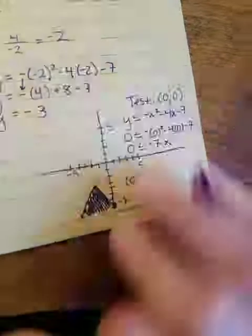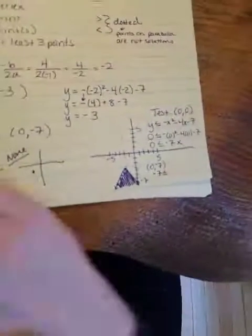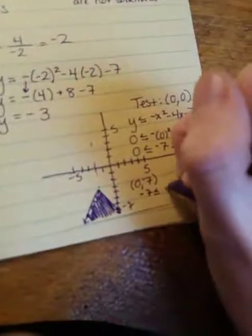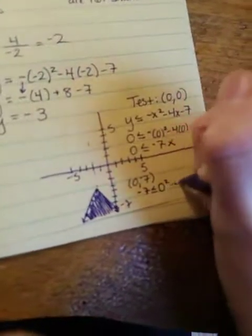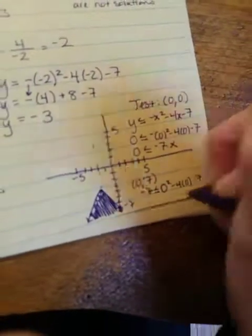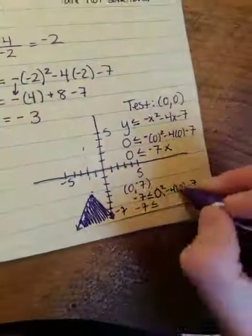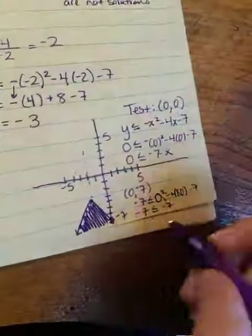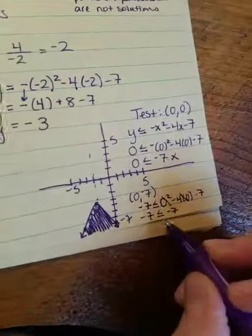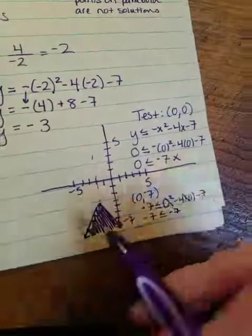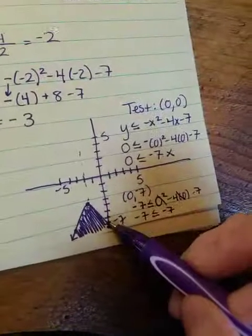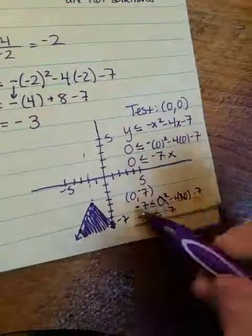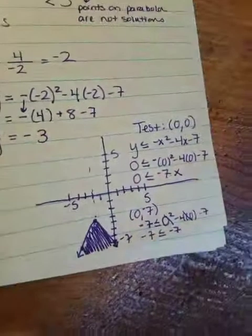So I'm putting negative 7 in for y. Again, this is not part of the process. This is me just showing you, circling back. And I'm putting 0 in for x. So I have 0 squared minus 4 times 0 minus 7. So I'm going to get negative 7 is less than or equal to, those are both 0, negative 7. Is negative 7 less than or equal to negative 7? Yes. And it's not just a coincidence. Any point you pick on this parabola will work, will satisfy the given inequality.